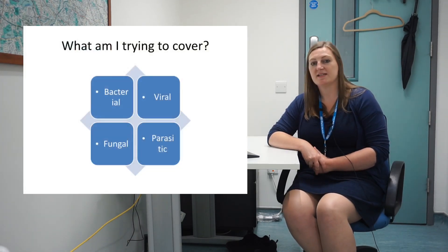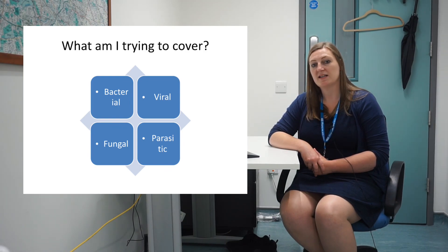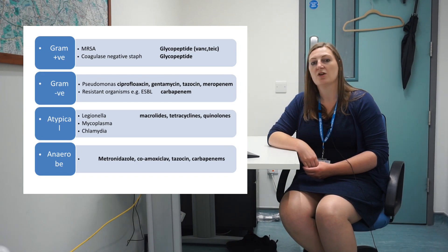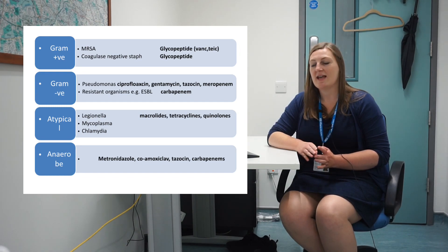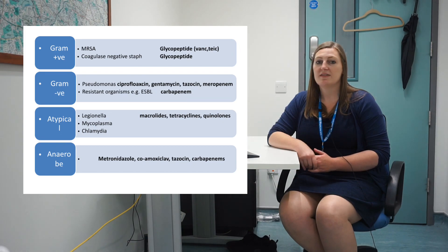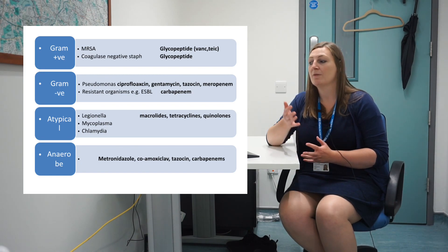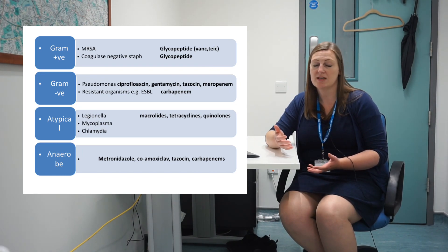The next thing when thinking about what you're trying to cover is the particular type of organism you might be dealing with. The majority of infections we see are bacterial, but we also see viral, fungal, and parasitic. If you think you're dealing with a bacterial infection, think about what type: is it gram positive, gram negative, atypical, or anaerobic? Thinking about the source and the likely organisms - whether gram positive or gram negative - really helps you understand why you're giving this empirical antibiotic and whether you need to change something.